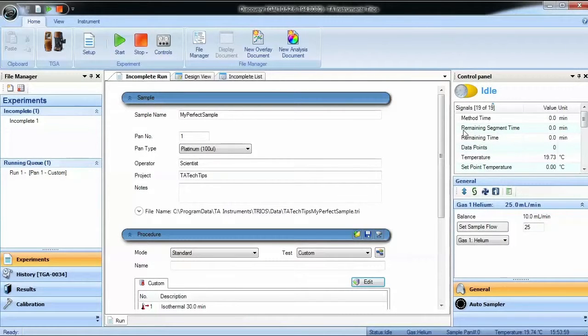When setting up a TGA experiment in Trios software, choose a pen type suitable for your application in the drop-down menu.